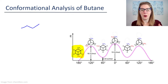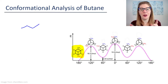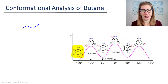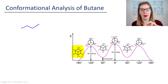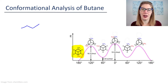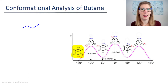Then we did a rotation. For this particular example, this figure from Chem Libre is rotating the front carbon, whereas we rotated the back carbon. You just rotate what makes sense to you—whichever makes you feel more comfortable—because either way you're going to get it correct.